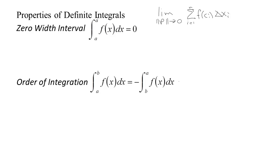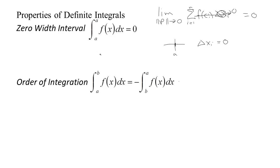If you have an interval that has no width — so you're going from a to a basically — then all of your subintervals can't have any width, because your partition would have to consist of all the same number a over and over again, and so delta x_i equals zero in every case. If that's zero then the whole sum turns out to be zero, and no matter how you take the limit the answer will be zero. So if we have an interval that doesn't have any width then the integral is going to be zero.